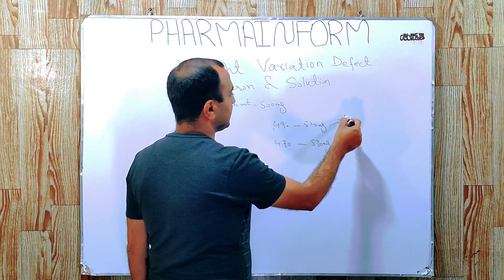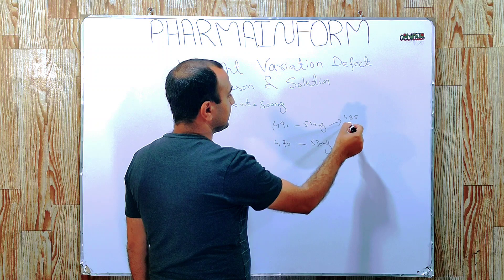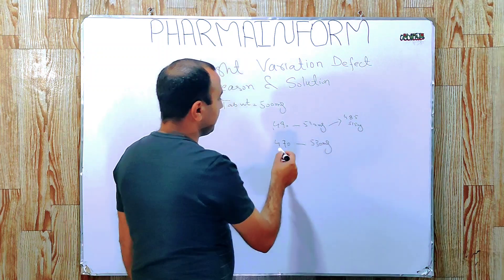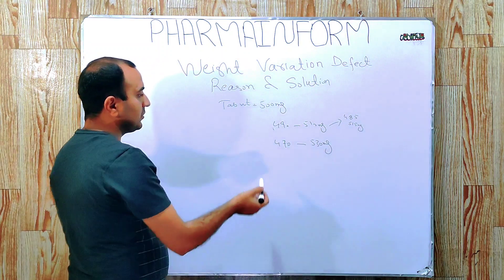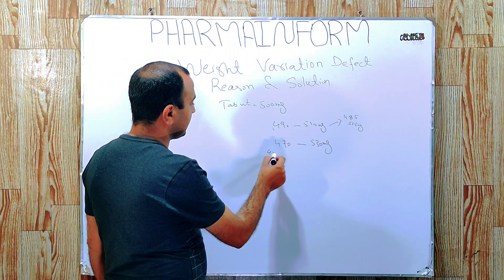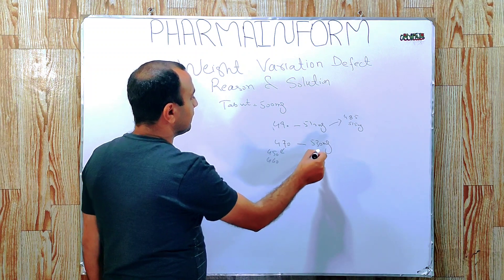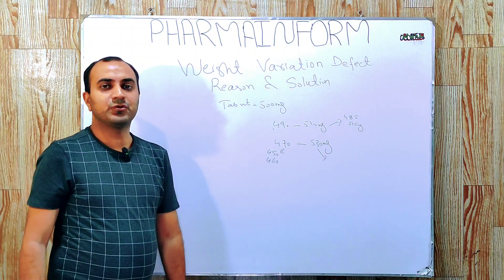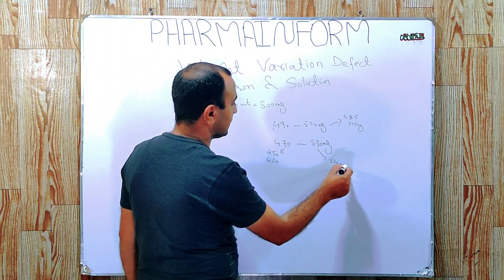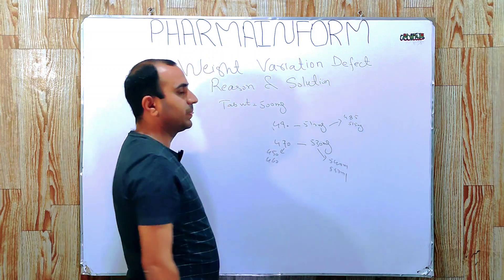But we observe that our weight is not uniform. For average weight, sometimes it is 485 mg and sometimes it is 515 mg. For individual tablets, some tablets are on the low range like 450 mg, 460 mg, and some are also on the upper side at 540 mg, 550 mg.